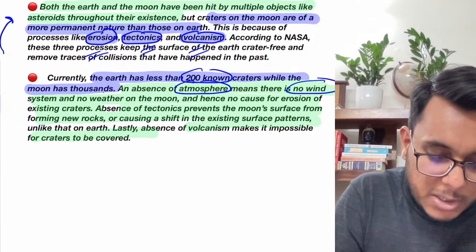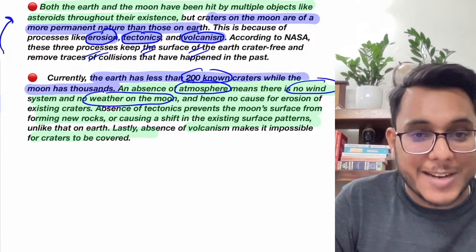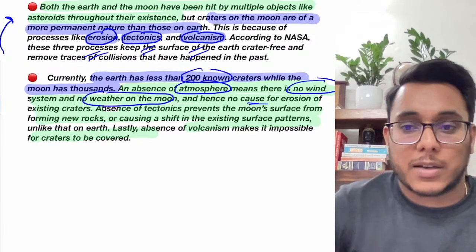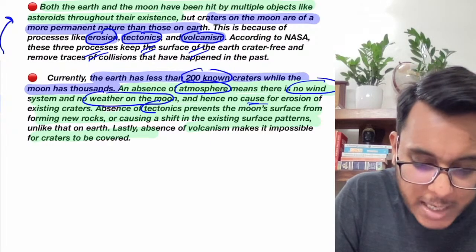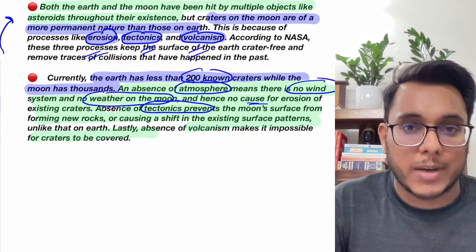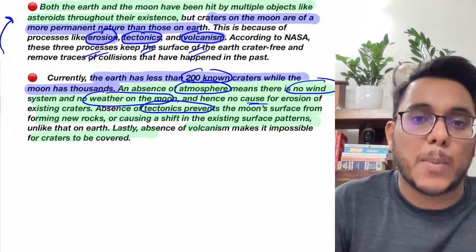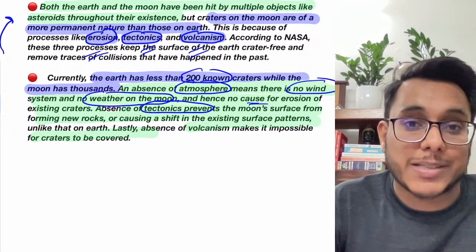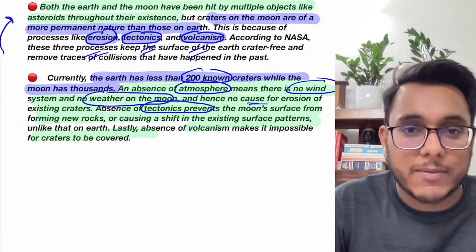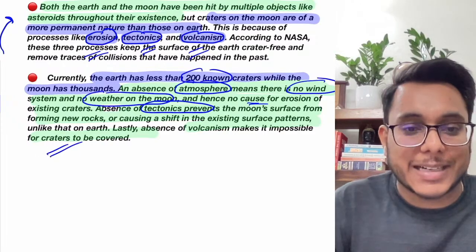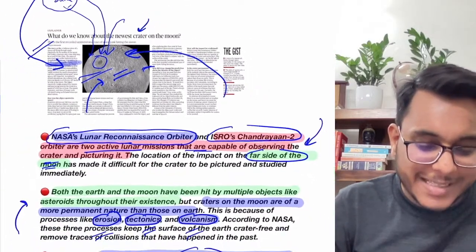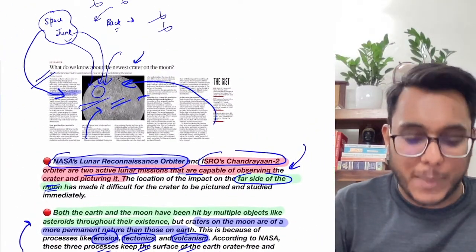Because the moon's atmosphere is very scarce, the wind system is not strong, so weathering does not occur and craters are a permanent phenomenon — they are not eroded away. Tectonic activity and volcanic activity are also very limited on the moon; on Earth, these processes change topography and build new rocks. On the moon, because these processes are absent, craters are essentially permanent. Earth has fewer than 200 known craters despite thousands of asteroid impacts, because others have been flattened by atmospheric processes.